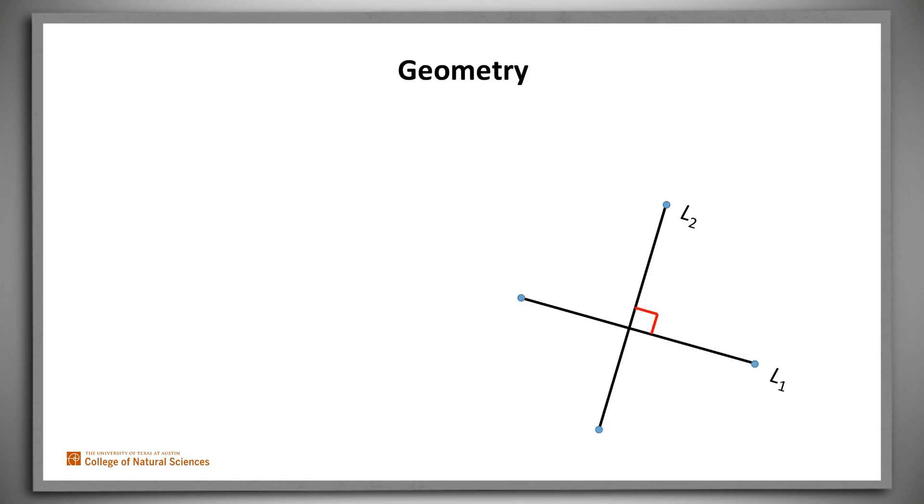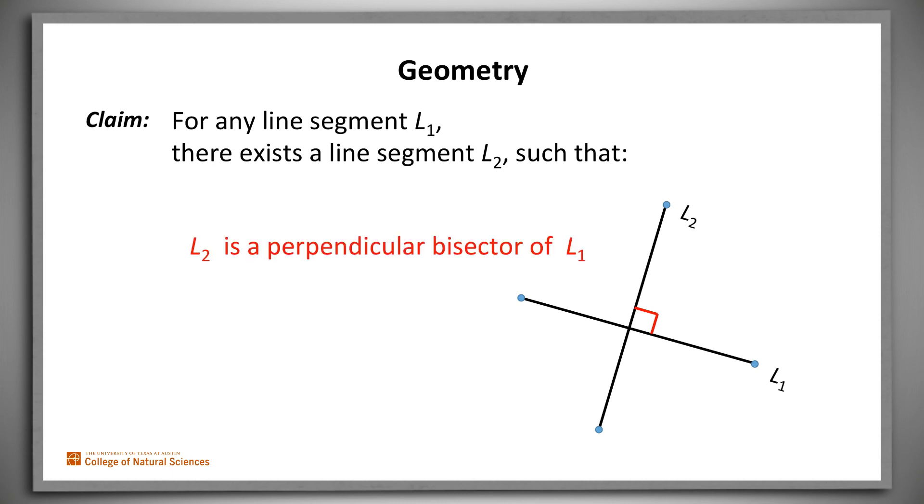Constructive proofs are common in geometry. Let's prove that for any line segment L1, there exists another line segment L2 that is a perpendicular bisector of L1. Note that drawing L2 in this particular case doesn't prove our claim. We must prove that there exists such an L2 for any initial L1. We can do that by construction.